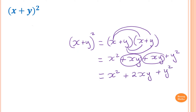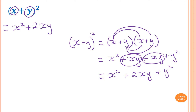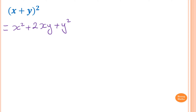The rule for expanding (x+y)² is: first square x to get x², then multiply x times y and double it to get 2xy, then add y². That gives x² + 2xy + y². Please stop the video and try this one yourself.